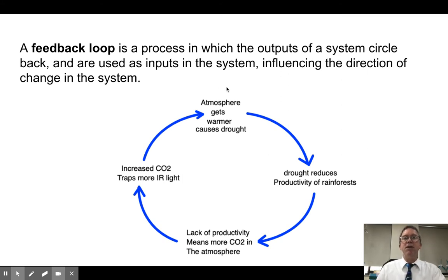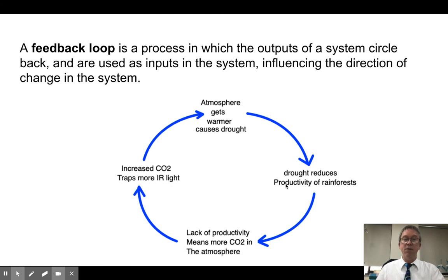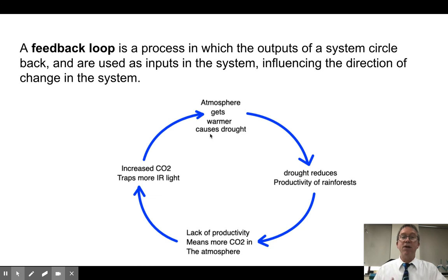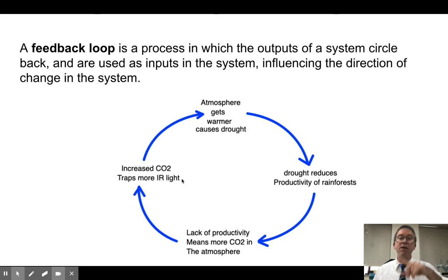So look at this one. As the atmosphere gets warmer it causes a drought in a rainforest area. The drought reduces the productivity of the rainforest, so they're not engaging as much photosynthesis. That lack of productivity means they're pulling less CO2 out of the air, leaving more of it in the air. The increased CO2 traps more infrared light making the air warmer, causing the drought to get worse, causing even less productivity, even more CO2, and even more warming. We call this a positive feedback loop.